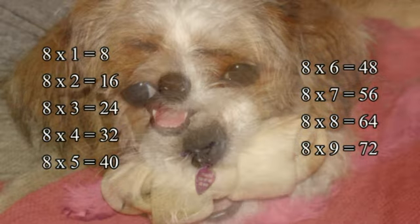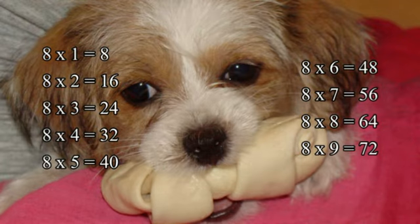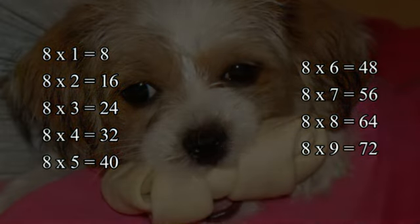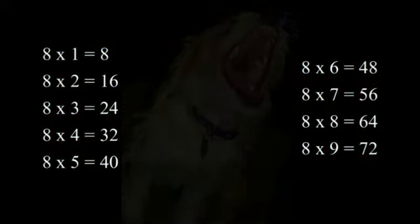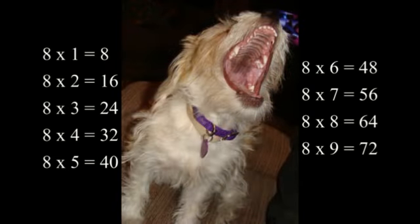8 times 1 is 8. 8 times 2 is 16. 8 times 3 is 24. 8 times 4 is 32. 8 times 5 is 40. 8 times 6 is 48. 8 times 7 is 56. 8 times 8, which is the same as 8 squared, is 64. 8 times 9 is 72.